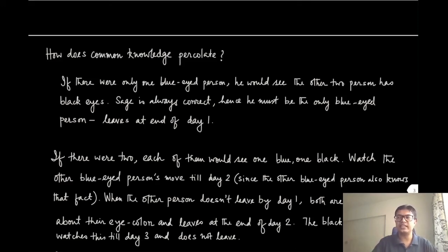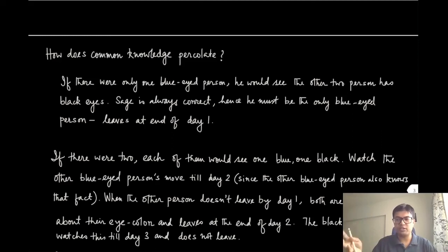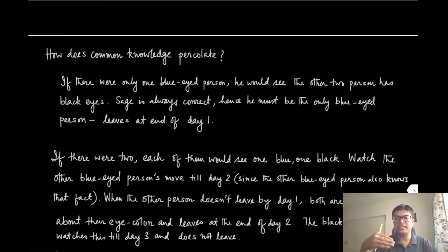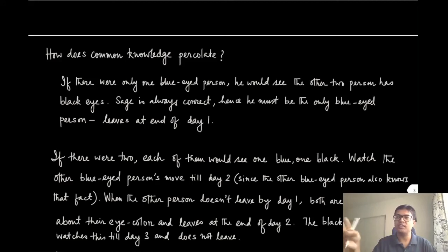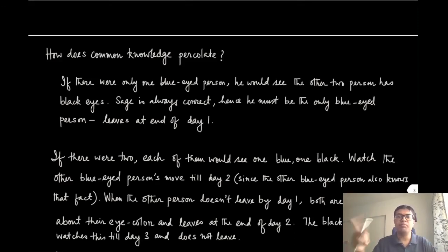If there were two blue-eyed people: on day 1, each blue-eyed person sees one blue and one black eyed person and thinks the other blue-eyed person might be the only one, and may leave at day's end. But since the other blue-eyed person reasons the same way, both wait. The fact that nobody left after day 1 tells both blue-eyed people that both of their eye colors must be blue, so both leave at the end of day 2. The black-eyed person sees two people leave and stays.